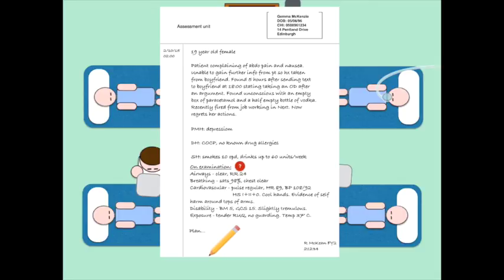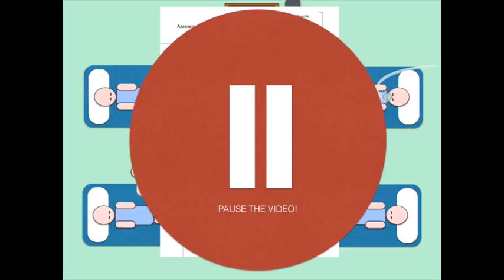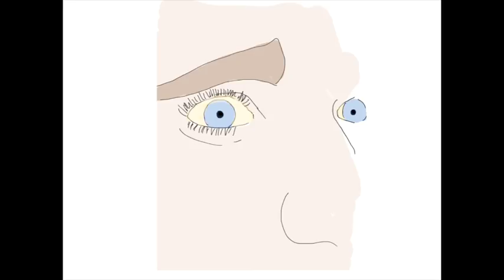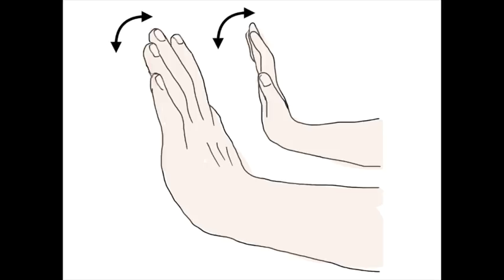Now, pause the video in a second. If Gemma was to be in acute liver failure, what findings do you think you might see on physical examination? Okay, so if Gemma had acute liver failure, one of the first things that might be immediately obvious on physical examination is that she would be jaundiced. You might also notice bruising. Asking her then to extend her hands out might reveal asterixis, or hepatic flap, a sign of hepatic encephalopathy.